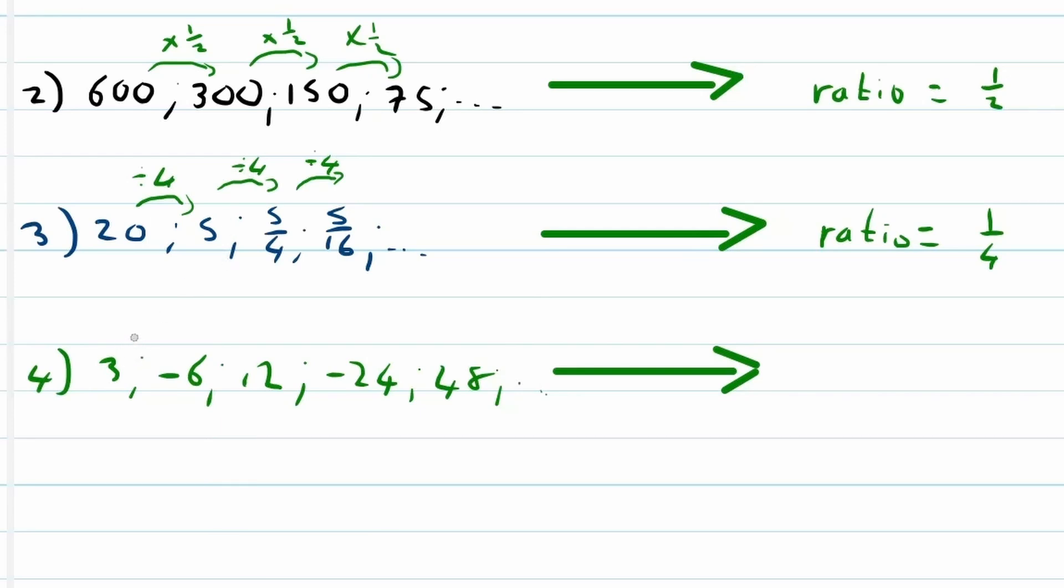Now the last example, example 4. This is a more tricky one because you can see to go from 3 to negative 6, negative 6 to 12, 12 to negative 24, negative 24 to 48, every time it's multiplying with 2. But the problem here is to get to negative 6, we can't multiply with a 2. We have to multiply with a negative 2. Very important.